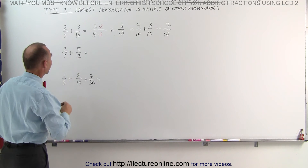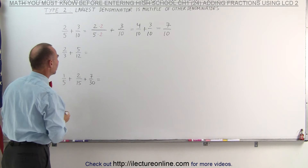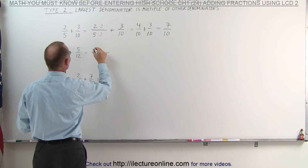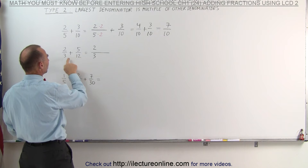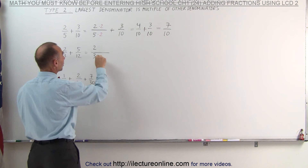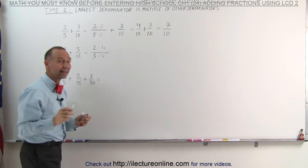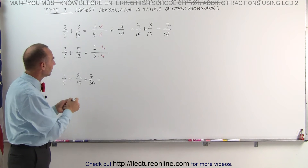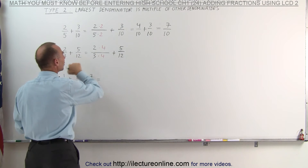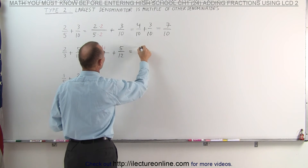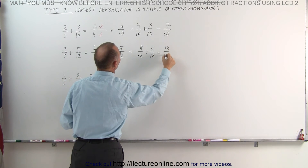Let's do it again on the second exercise. Again, notice that the largest denominator is a multiple of the smaller denominator, which means that we can write the smaller denominator in such a way that the denominators will become the same. The question is, what do I need to multiply 3 by to get 12? The answer is, multiply times 4. 3 times 4 is 12. But if I do that to the denominator, I must do exactly the same to the numerator. The other fraction remains unchanged, because the denominator is already the lowest common denominator. Now we get 2 times 4, which is 8 over 12, plus 5 over 12, which is 13 over 12.